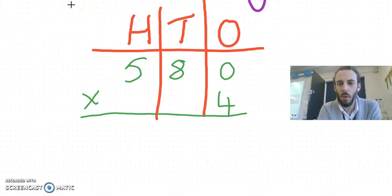Now, when you're multiplying, we always start from the ones and we would do four multiplied by zero, that's in my ones column, I'm writing the answer in my ones column, it is zero.